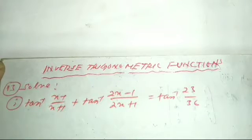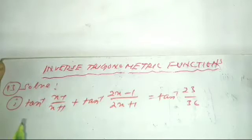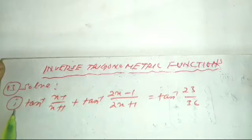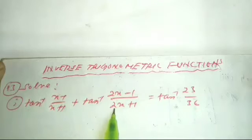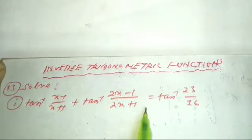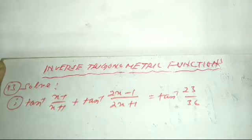Hello everyone, welcome to my channel. Last time I set a question, and all questions are linked below. So we can put question number 13. We are going to solve: tan inverse of (x-1)/(x+1) plus tan inverse of (2x-1)/(2x+1) equals to tan inverse of 23/36.